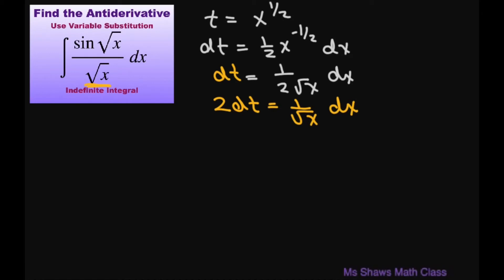Now let's substitute. We have the integral of sine of our square root of x. This square root of x is t and this is one divided by square root of x, which is two dt.